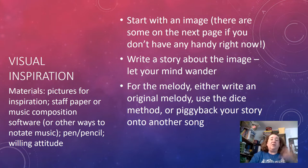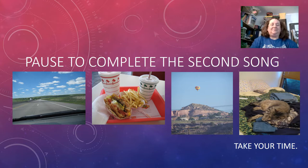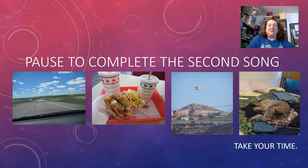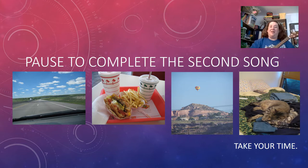For the melody of your song, take your story about the image and refine it into a specific song. You can write an original melody, use the dice method, or piggyback your story onto another song. I've got three pictures for you if you'd like to use them: a flat road with a fluffy white clouded sky, a half-eaten meal from In-N-Out Burger, a hot air balloon over the hills of Albuquerque, and a cat exhausted on top of clean laundry. Take time to write a story based on the image, then write your melody and accompaniment.